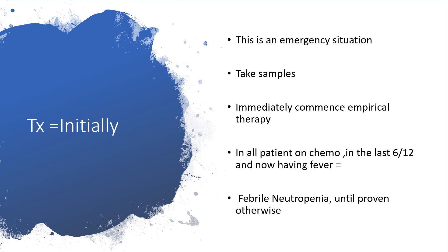Febrile neutropenia is an emergency situation. Once it is identified, all emergency protocols are activated. Samples are taken immediately, then empirical antibiotic management is commenced — we do not wait for microscopy, culture, and sensitivity results. For example, a patient on chemotherapy for the past six months who now presents with fever: that is febrile neutropenia until otherwise proven.